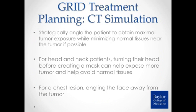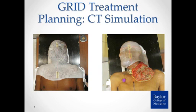For CT simulation, you want to strategically position the patient to obtain maximal tumor exposure while minimizing normal tissue in the beam path. For example, with a head and neck patient with a large bulky tumor, you may turn their head before creating their mask to expose more of the tumor. For a chest tumor, you might angle the face away so you won't exit through the chin. This positioning decision comes from looking at the patient and the tumor location. For our patient on the left with a large bulky tumor protruding from his left neck, we turned his head slightly so the beam could pass through the tumor without treating his chin.